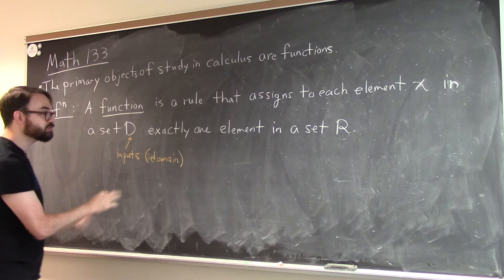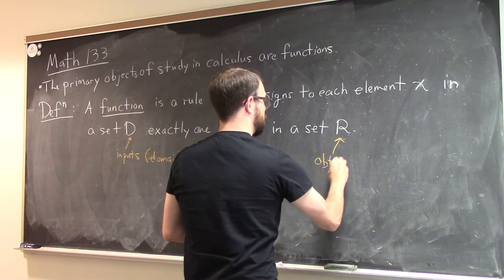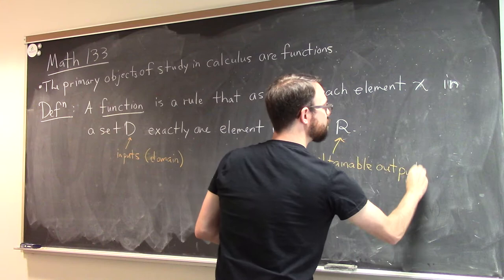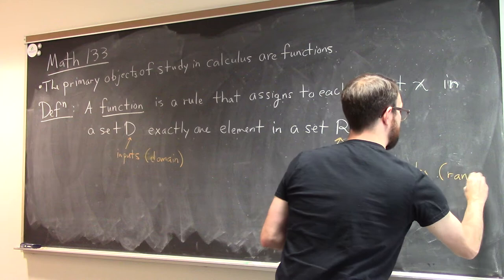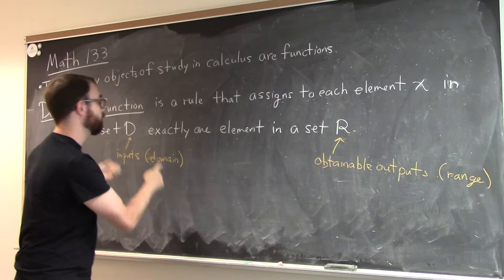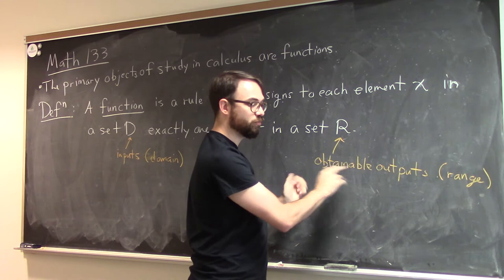Here, this is our set of... I'm going to be a little more specific than you might have seen, not just the set of possible outputs, but the set of obtainable outputs, this is what we call the range. And I'll clarify what I mean here about this obtainable output in a second.